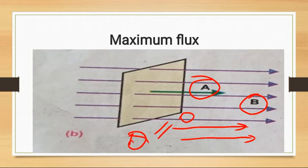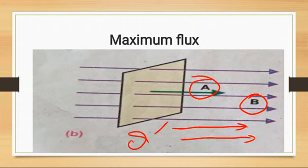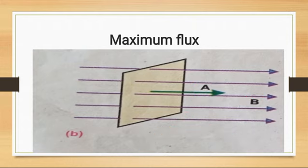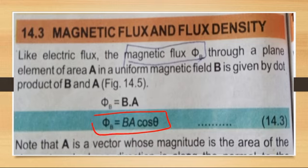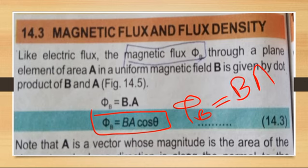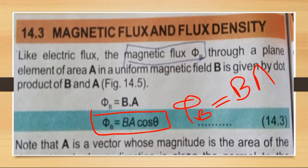When two vectors are parallel to each other, the angle theta between them is equal to 0 degrees. The angle between B and the normal direction of area A is 0 degrees because A is parallel to B. Using the basic formula phi B equals B A cos theta, with theta equal to 0 degrees, phi B equals B A cos 0, which gives phi B equals B A. This is the maximum value of magnetic flux, obtained when B and A are parallel to each other.